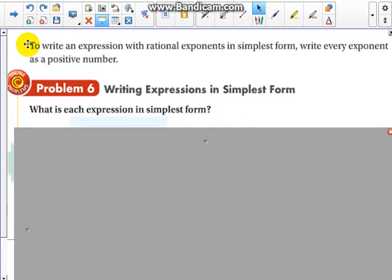Now notice our note at the top. It says to write an expression with rational exponents in simplest form, write every exponent as a positive number. So no negative exponents. Remember that rule which we've hit in algebra 1 and now in algebra 2 we've hit on it again.